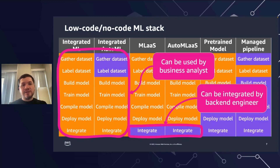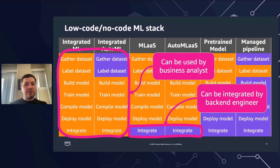The integrated family can be used by a business analyst — to the level where you don't need to write even a single line of code to start using machine learning on your data. Machine learning as a service or AutoML as a service can be integrated by a backend engineer; you don't need a team of data scientists or machine learning engineers. So in these cases, you can start getting value from machine learning very early with minimal resources.